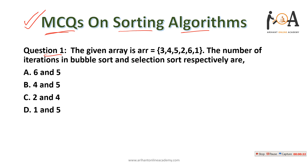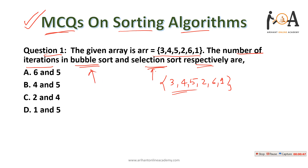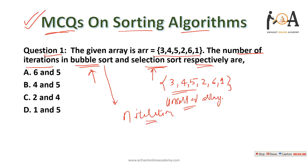The given array is 3, 4, 5, 2, 6, 1. The number of iterations in bubble sort and selection sort respectively are what? We need to find how many iterations will take place sorting this array with bubble sort and selection sort. This is an unsorted array, so bubble sort will take n iterations, where n is the number of elements. There are six elements, so six iterations will be taken by bubble sort.